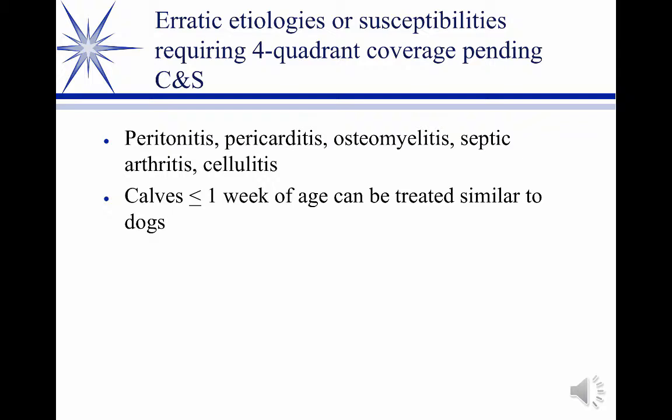Speaking of calves — calves less than a week of age can be given pretty well all the antibiotics you would use in a dog, orally. This is because the esophageal groove is closed at that point. So you give the Clavamox, the amoxicillin tablet, whatever, and they swallow it and it goes through the esophageal groove right into the abomasum without entering the rumen. By six weeks of age that no longer occurs — the drug enters the rumen and you have to treat them as an adult cow, with all the associated limitations.